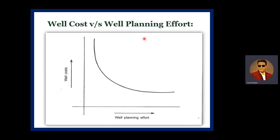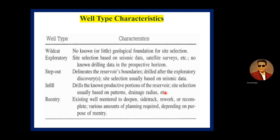A graph shows well cost on the Y-axis and well planning effort on the X-axis. When well planning effort is very low — meaning we are not investing in planning — the well cost is very high. As we continue to increase well planning effort, the cost decreases. So we can save well cost by increasing well planning efforts.